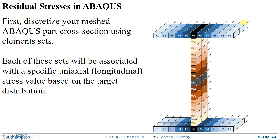Since I have a symmetric residual stress distribution, I can select all the mesh elements at the edge or tip of my section flange and call them F1, then select the second row of mesh elements and call them F2, and do the same for the web. I create sets based on mesh elements and then tell Abaqus that each set is associated with a specific value for the uniaxial or longitudinal stress — or any stress component.